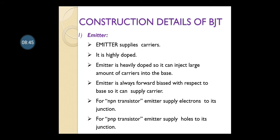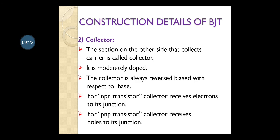Emitter is always forward biased — remember this important point. For NPN transistor, electrons are the majority carriers and they move from emitter towards base. For PNP transistor, holes are majority carriers and they move from emitter to base. The collector section is on the other side — it collects whatever carriers the emitter emits. The majority carriers move from emitter through the base and directly move towards the collector region, which is why it is called the collector.